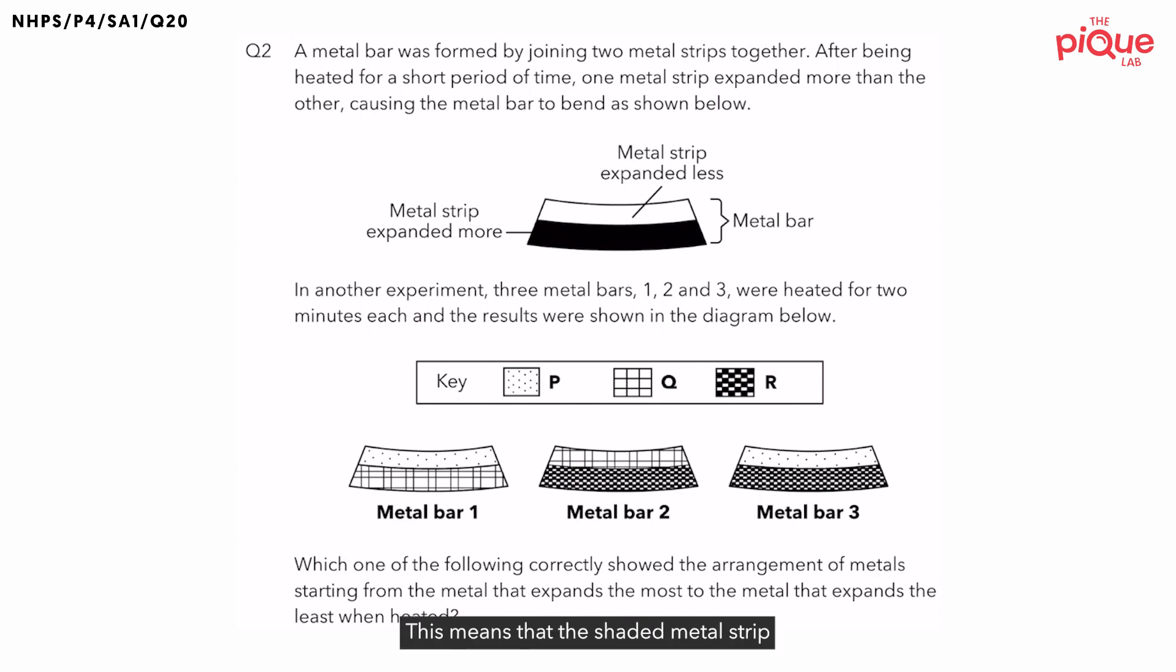Why is this so? This means that the shaded metal strip must have gained heat faster from the heat source and expanded more than the unshaded metal strip. Why do you think the metal strip expands at different rates? Let's understand why that is so.